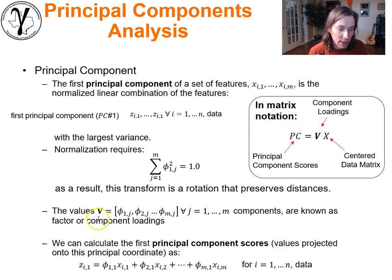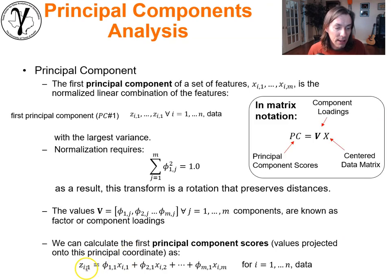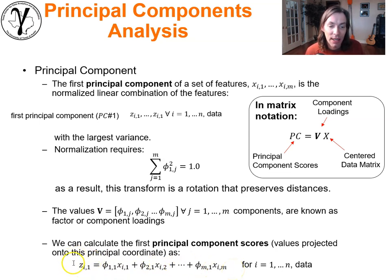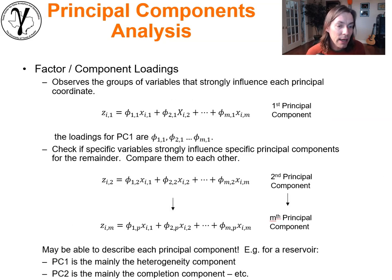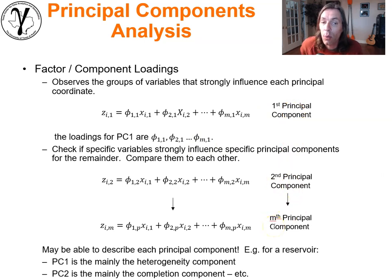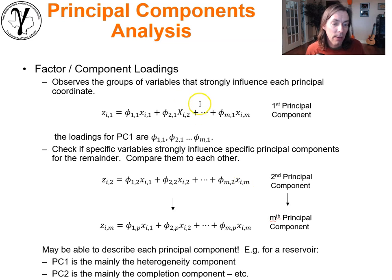Repeating this for all possible principal components one through m — as long as we meet the constraint that n minus 1 is greater than m — we're able to do this for all feature dimensions. We calculate the first principal component, the second, and all the way up to m.